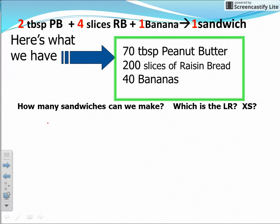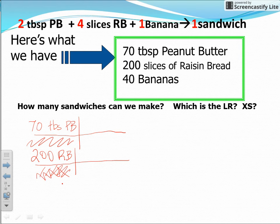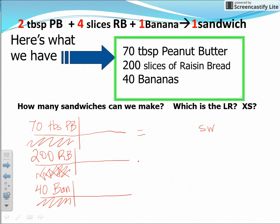Here's how you go about doing this calculation — I'll make it look like the dimensional analysis problems we've been doing in class. We start with our givens: 70 tablespoons of peanut butter, 200 slices of raisin bread, and 40 bananas. We're trying to find out how many sandwiches (SW) we can make, so we'll convert all of these to sandwiches.